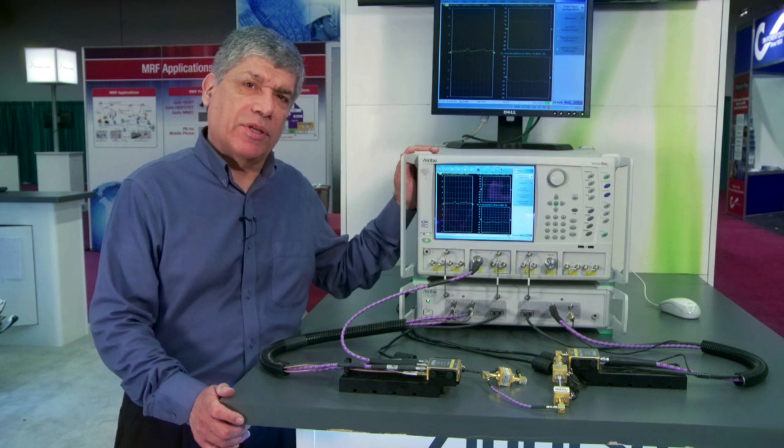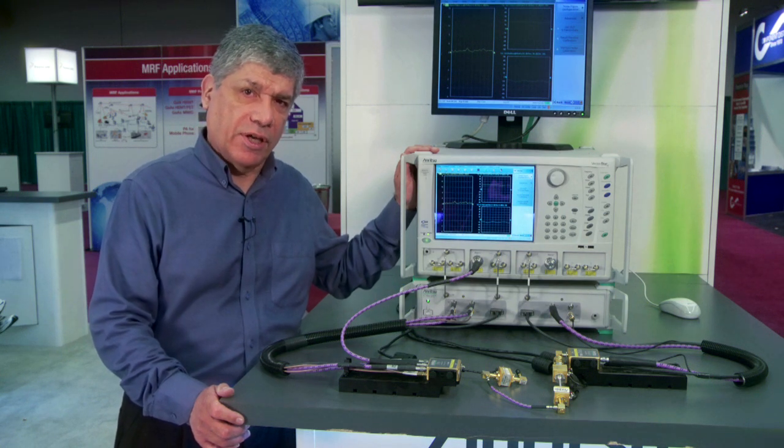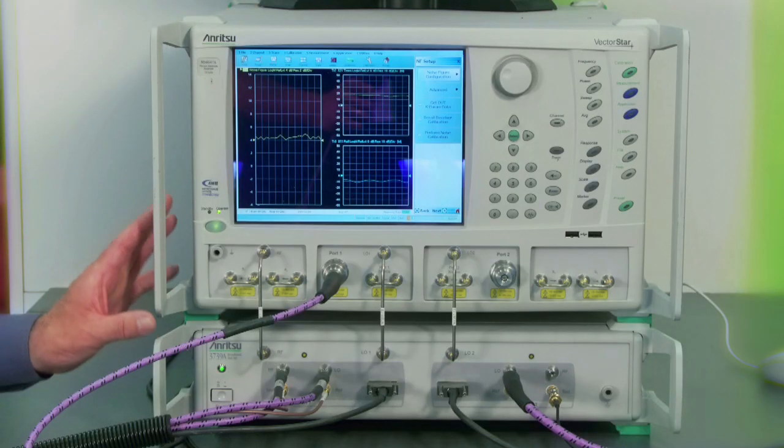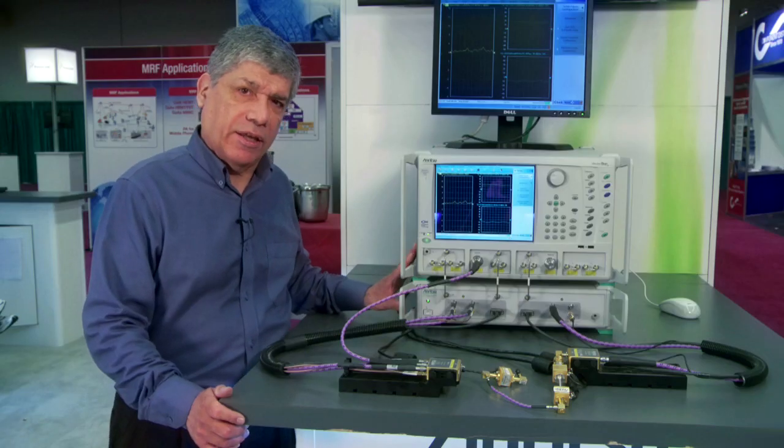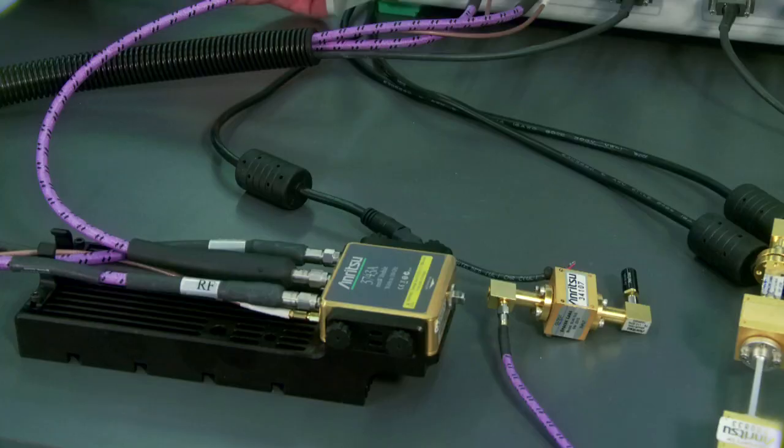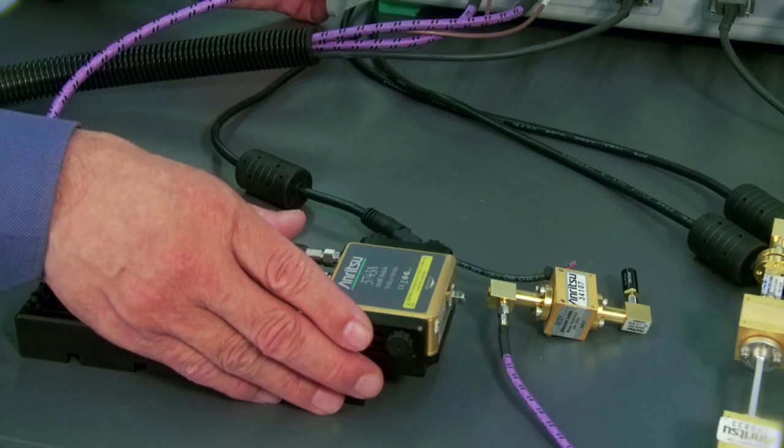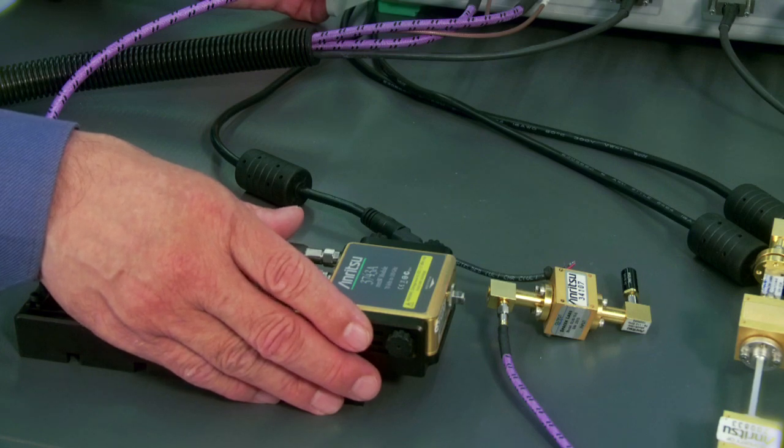If you're going to be making measurements above 70 gigahertz, then you can move to the broadband system. The broadband system uses the test set with the millimeter-wave modules. So when you add your test set, you can add your module in order to do millimeter-wave measurements above 70 gigahertz.